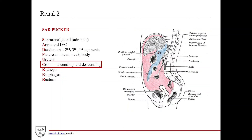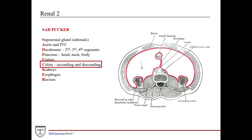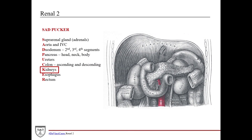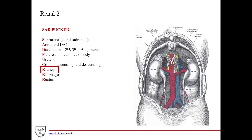C is for colon. In the sagittal diagram, here's the transverse colon — the transverse colon is intraperitoneal, surrounded by the peritoneum. In the axial view you get a good view: the ascending colon here and the descending colon here — you can see they are traveling behind the peritoneum, so those are retroperitoneal. K is for kidneys — they are retroperitoneal as well, shown running alongside the ascending and descending colon.